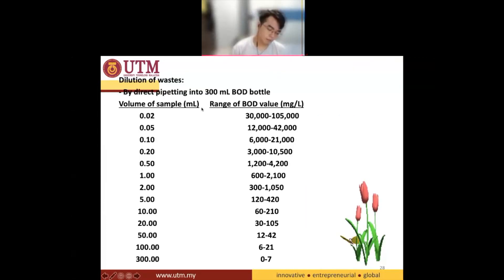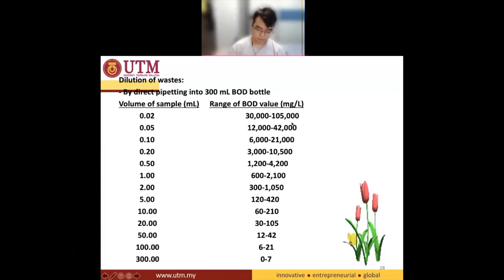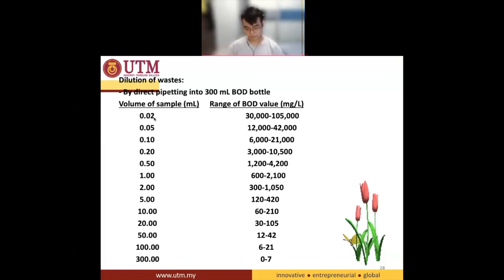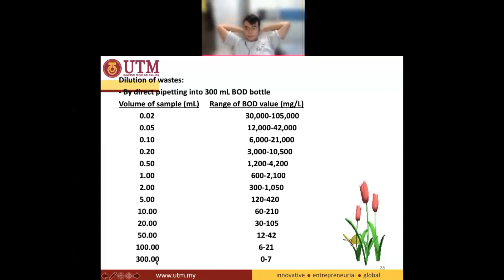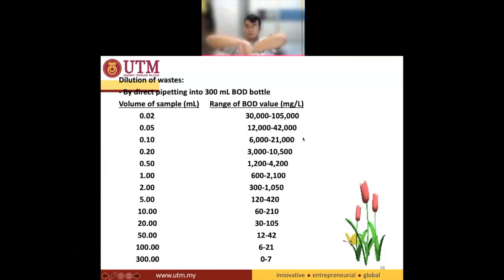This is your BOD bottle — the volume is 300 mL, not 400, I'm sorry. So, if you think the water samples have a BOD in a certain range, you add 0.02 mL of sample and top up with 299.98 mL of dilution water. If your BOD is between 120 to 420, you add 5 mL of sample and 295 mL of dilution water. If the BOD is between 0 to 7, you don't need dilution — all 300 mL is your sample placed in the BOD bottle. This is the table you need to know.